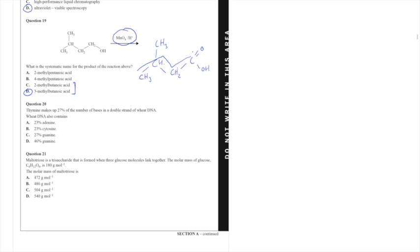Question 20. This one was a little bit tricky. Thymine makes up 27% of the number of bases in a double strand of DNA. It's very easy to be thrown by this—what you needed to know was that A pairs with T and G with C. Therefore, if we have 27% of the DNA being T (thymine), that means another 27% is also going to be adenine.